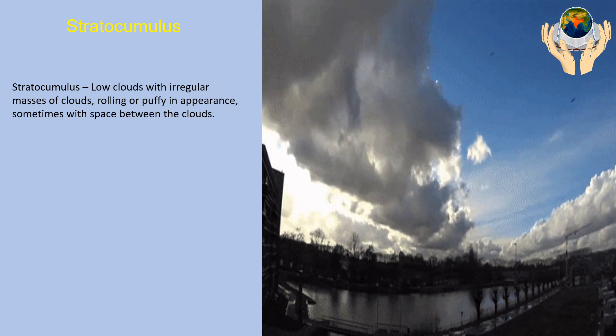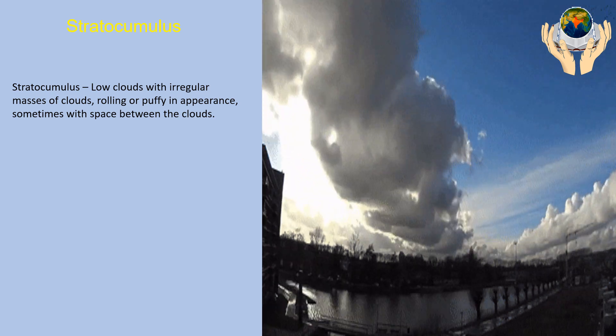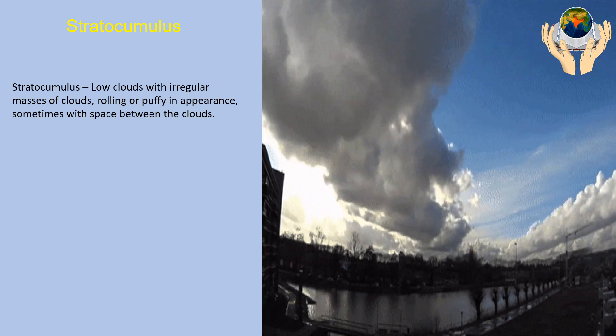Stratocumulus. Stratocumulus is the low cloud with irregular masses of clouds, rolling or puffy in appearance, sometimes with space between the clouds.